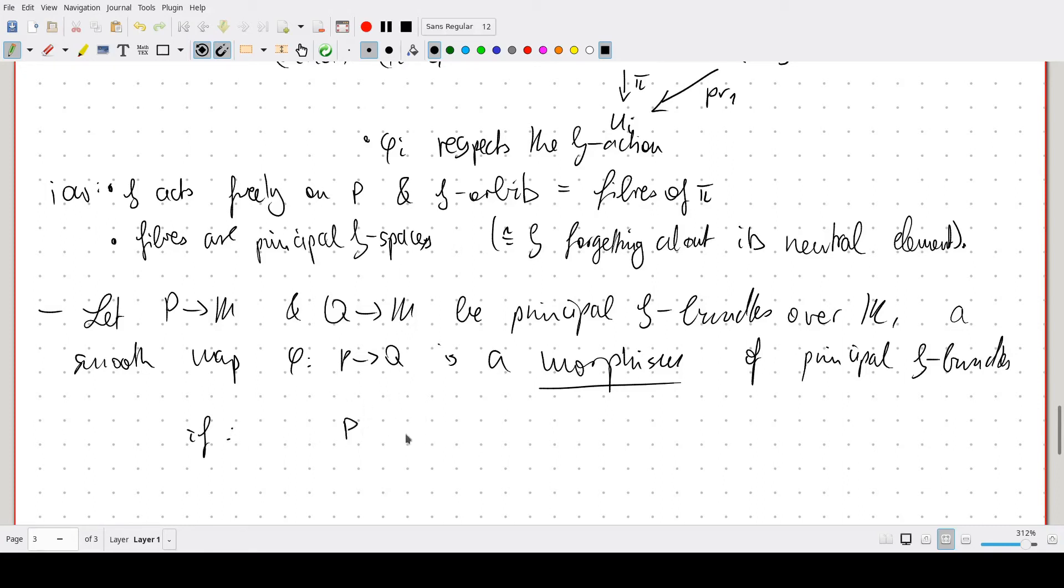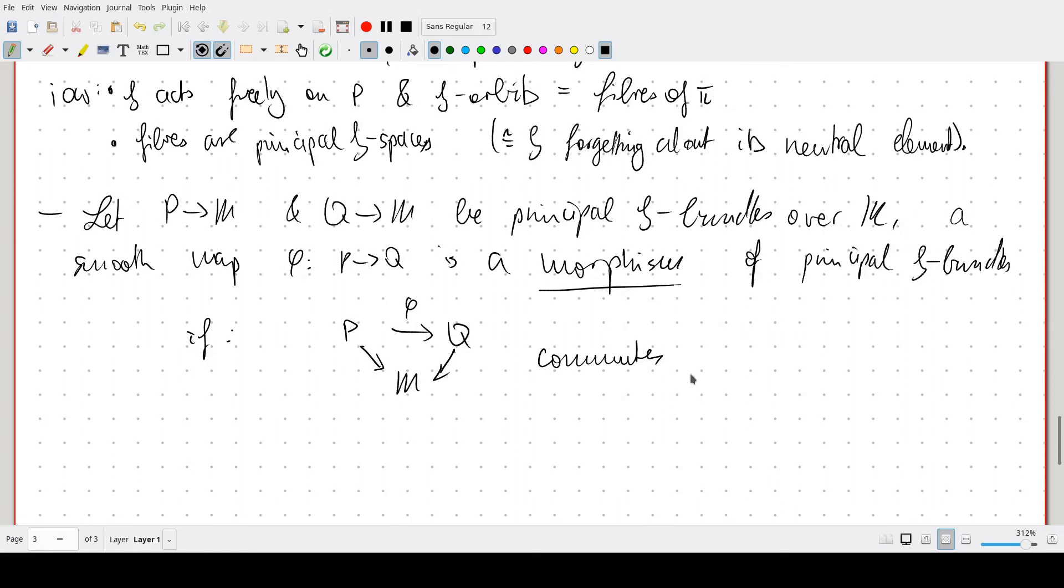if two conditions are satisfied. Firstly, well, we have P, we have Q, and we have M, then we have here the bundle projection maps, and here we have phi if this diagram commutes. And secondly, if phi respects the G action.